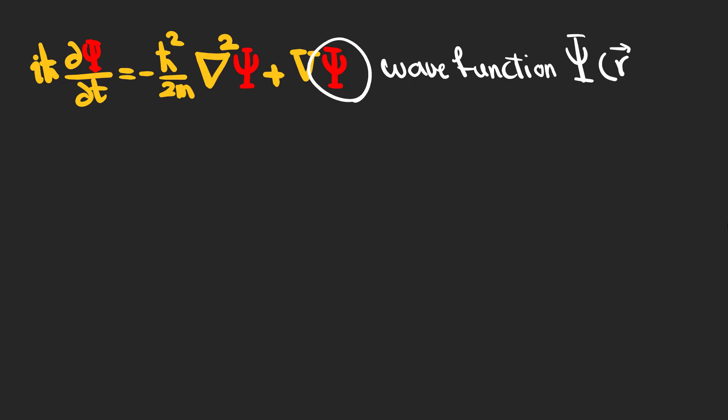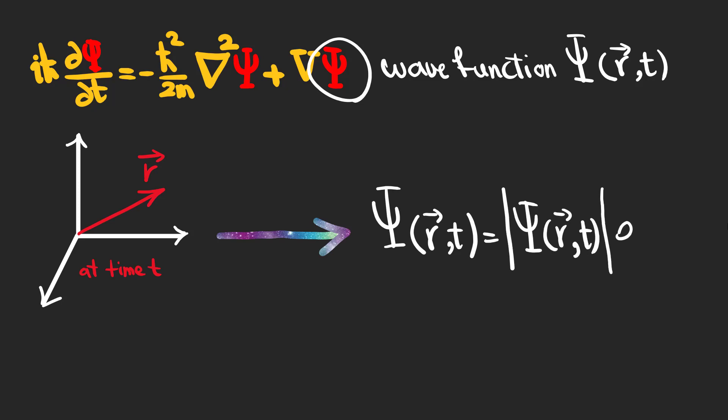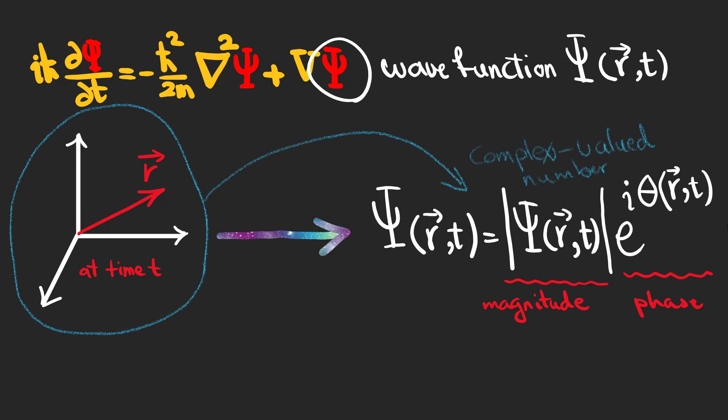The wave function is a function of space and time and is complex valued. It's a function of a vector r and the time t and yields a magnitude and a phase. In other words, the wave function maps the time and position of a particle to a complex valued number.